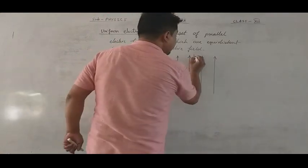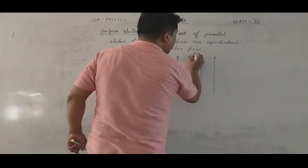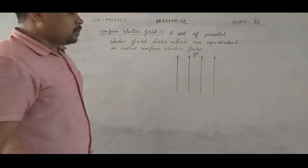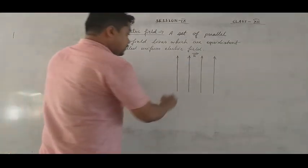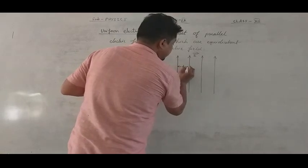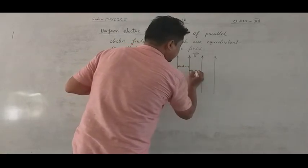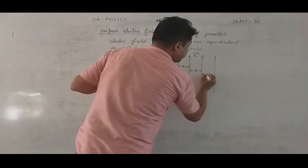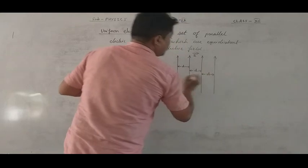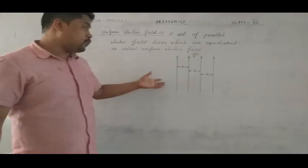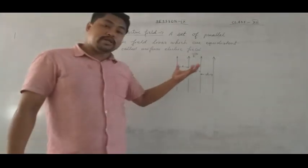Uniform Electric Field lines are parallel and equidistant. The symbol of the Uniform Electric Field is the E-vector.